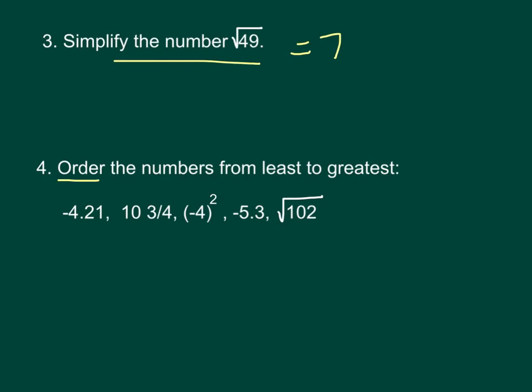Order the numbers from least to greatest. Always underline least to greatest. So you want to change them all to probably decimals in this case. So we have negative 4.21. We have 10.75. Negative 4 squared means negative 4 times negative 4. That gives us 16.